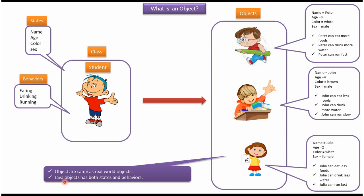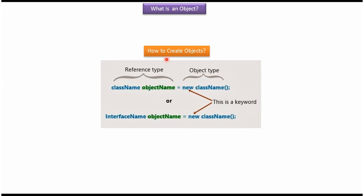This is how we can create objects: class name, object name, equal to new keyword, class name, open bracket and close bracket — this is called a default constructor. Another way is: interface name, object name, equal to new keyword and default constructor. This part is called reference type and this part is called object type.